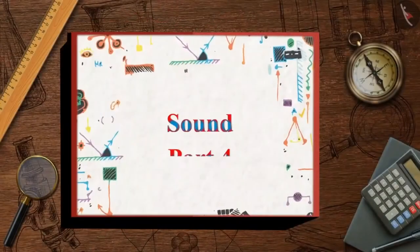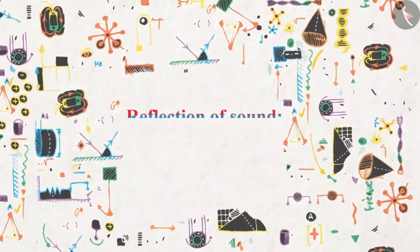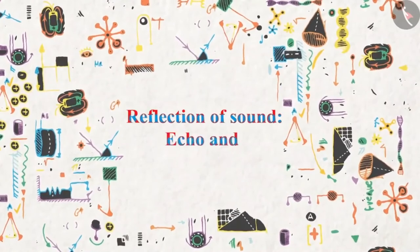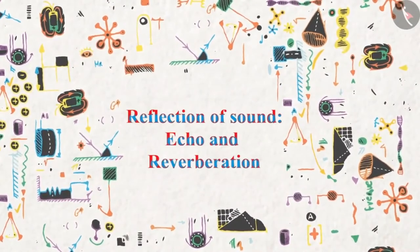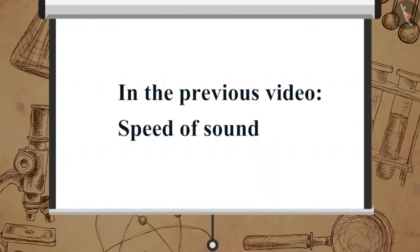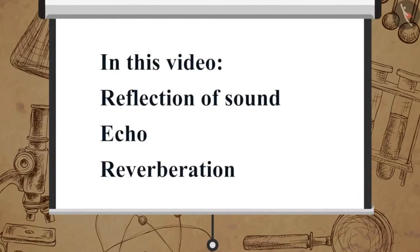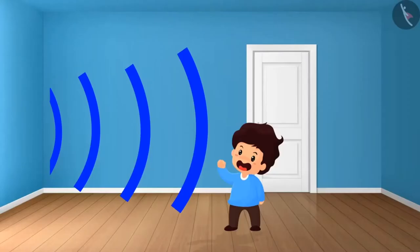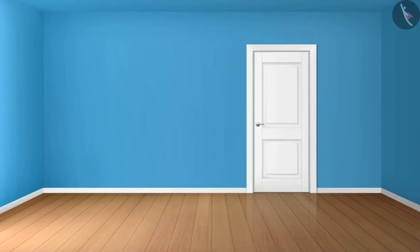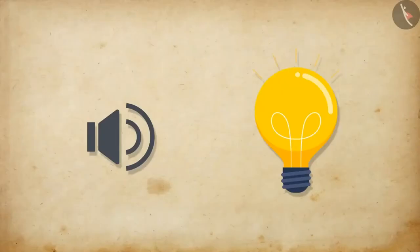Sound Part 4: Reflection of sound, echo, and reverberation. Reflection of sound in solid or liquid mediums is like a rubber ball which bounces off when hit on a hard surface. Reflection of sound is similar to the reflection of light.